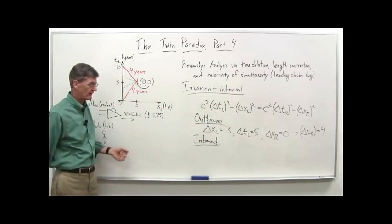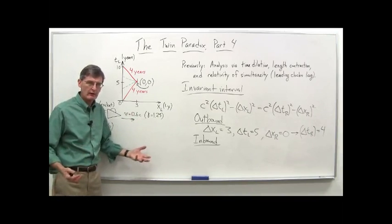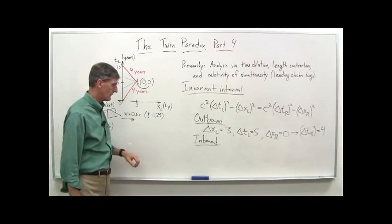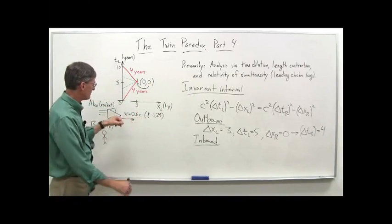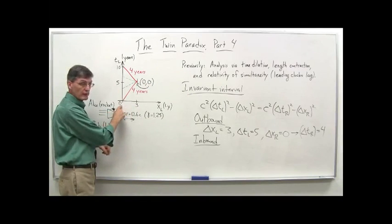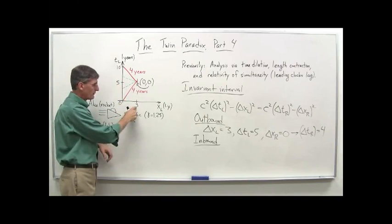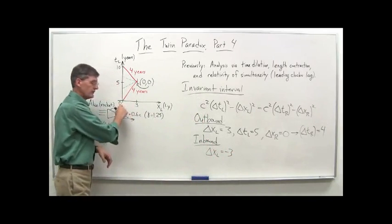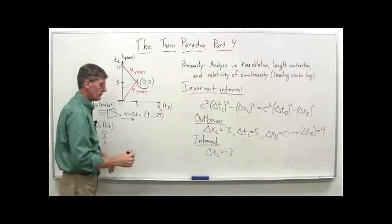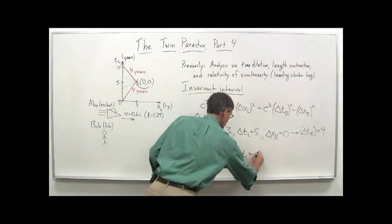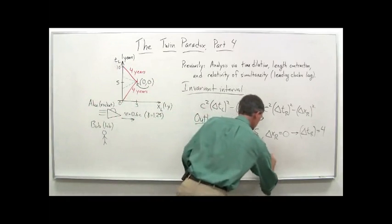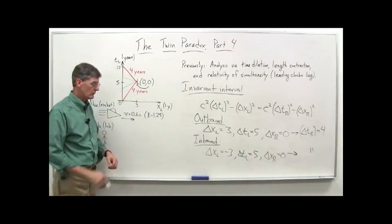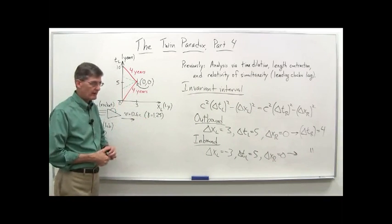For the inbound trip with the invariant interval: Alice ends up at zero and starts at three as far as Bob is concerned, so δX_L is negative three (zero minus three). δT_L equals five again, and δX_R is zero again. You get δT_R equals four once more. That's the invariant interval approach — useful in certain cases for a quick answer, though you started with diagrams and time dilation analysis first to build intuition.